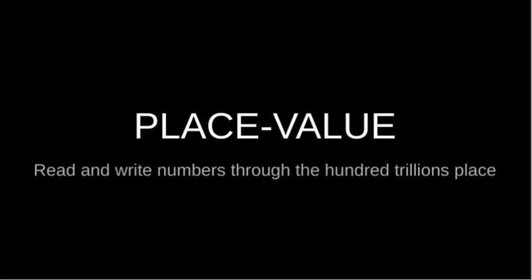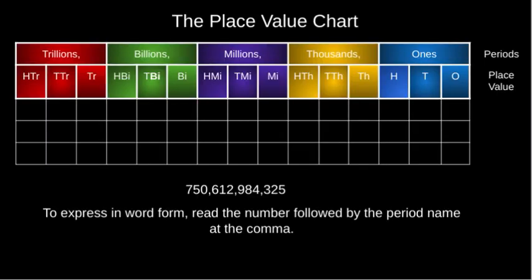Welcome to this video where we'll be talking about place value — how to read and write numbers through the hundred trillions place. Let's get started with a place value chart. A place value chart is a chart that helps us organize numbers so that we can identify the value of every digit. This place value chart is made up of five sections: ones, thousands, millions, billions, and trillions. These sections are known as periods.